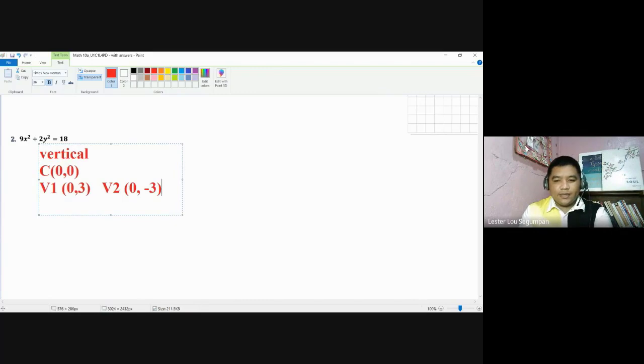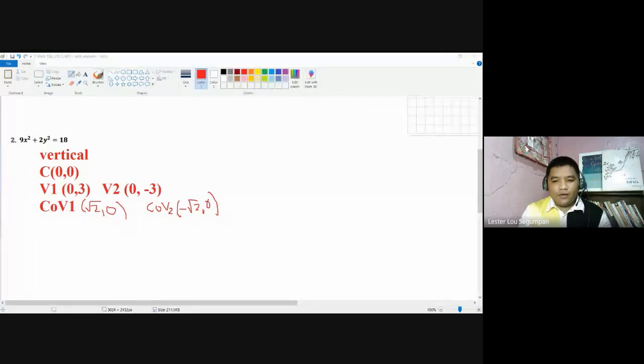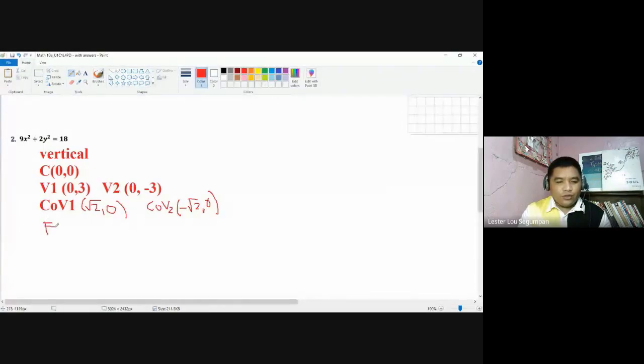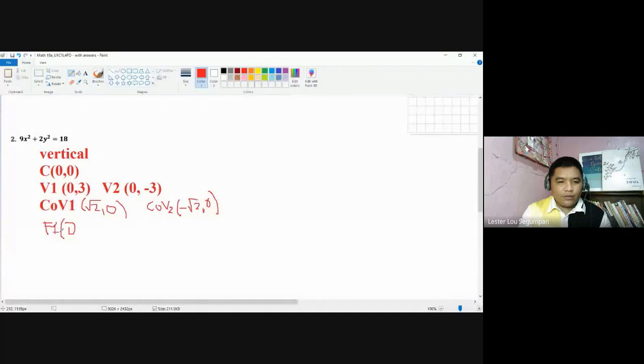Your co-vertices are actually placed at square root of 2. So you have co-vertices, square root of 2, 0. And then your co-vertex, second co-vertex rather, is negative square root of 2, 0. And finally, for your focus, your focus is at 0, square root of 7. This is focus number 1. And then the focus number 2 is 0, negative square root of 7.